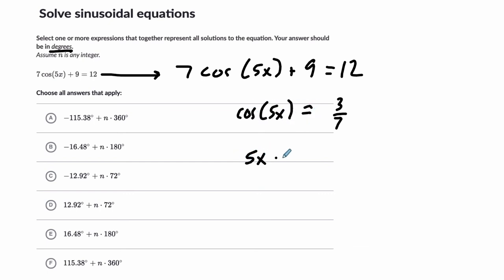Take the inverse cosine of both sides, and when we take the inverse cosine of 3 sevenths on the calculator, you're going to get about 64.62 degrees, plus 360 times n.